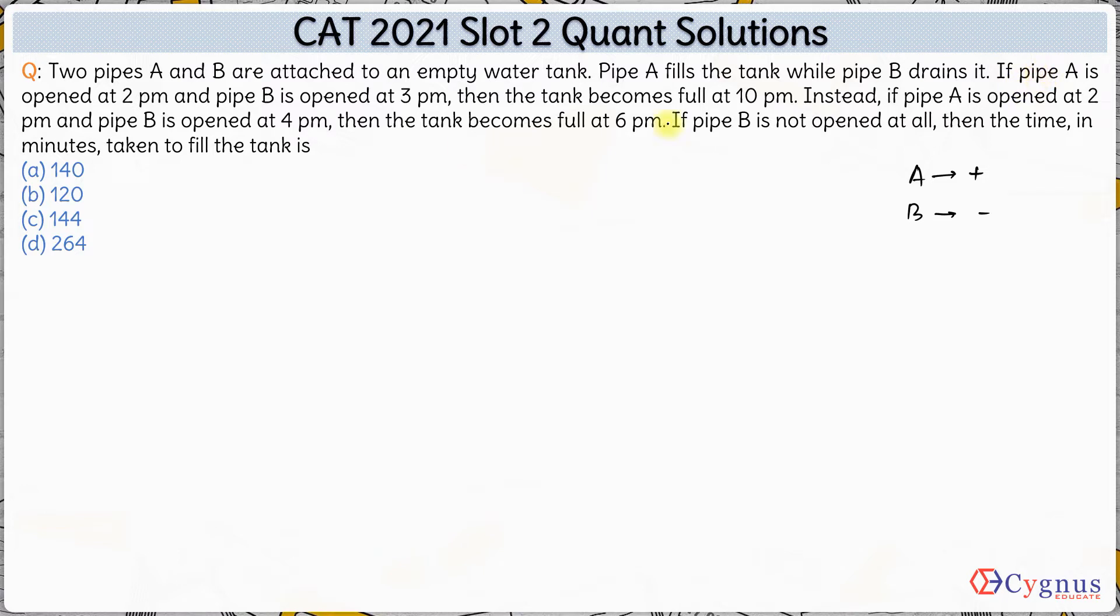Okay, if pipe A is opened at 2pm, let us draw the timeline. At 2pm pipe A is opened and pipe B is opened at 3pm. So after 3pm both of them are working, A plus B. Now the tank gets full at 10pm. The tank is full at 10pm.